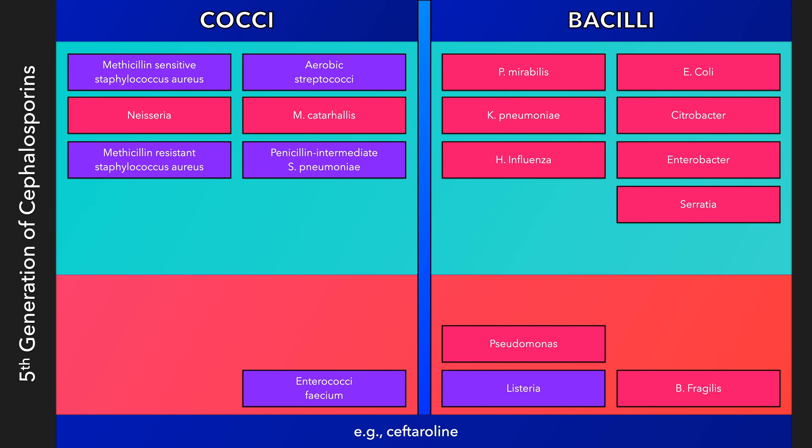There are also combinations of cephalosporins with beta-lactamase inhibitors, such as ceftolozane-tazobactam, which are active against Pseudomonas aeruginosa, Bacteroides fragilis, and ESBL-producing Enterobacteriaceae. These combinations, however, go beyond the scope of this lecture.